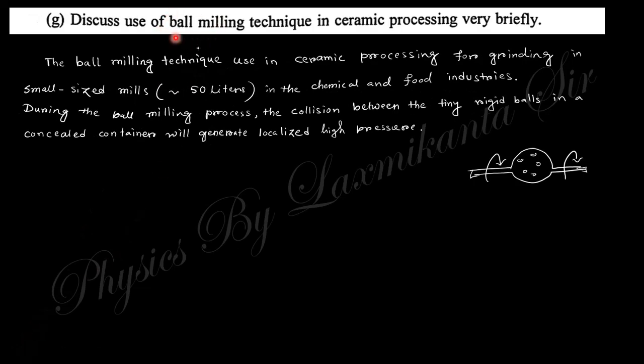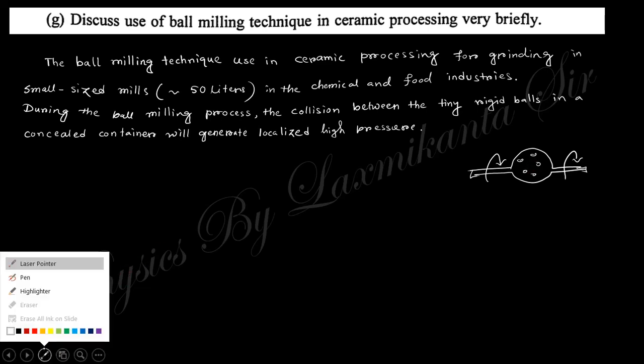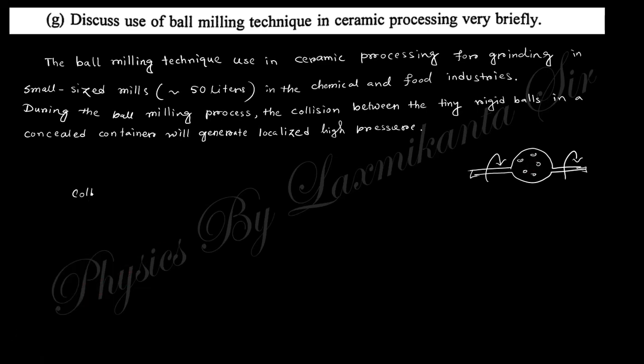Next question: Discuss the use of ball milling technique in ceramic processing. Ball milling means there are different sizes of balls within a globe. If you rotate that one, these balls are collided with the wall. If there is any material you need to reduce to small size, then the balls collide and this material forms into powder form. This collision of balls helps to produce powder form nanosized nanomaterial.